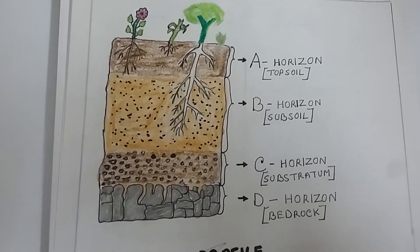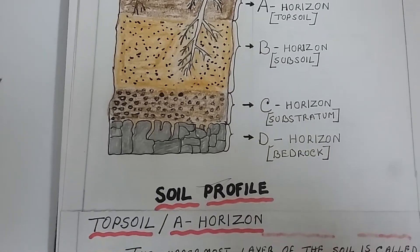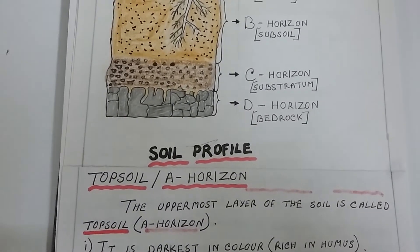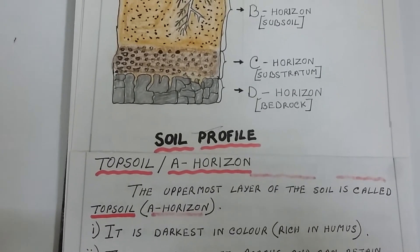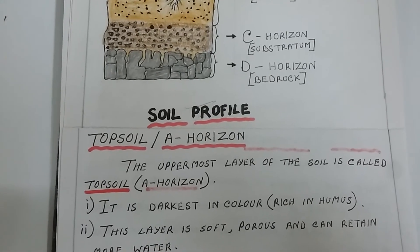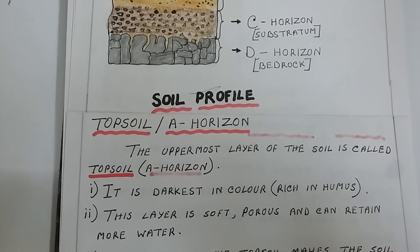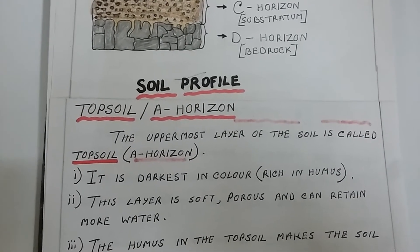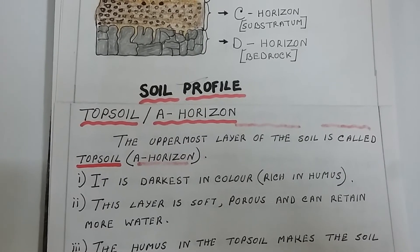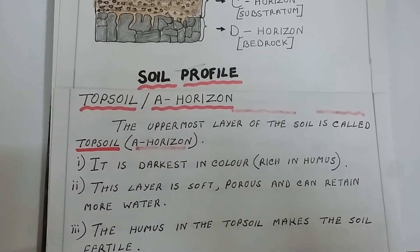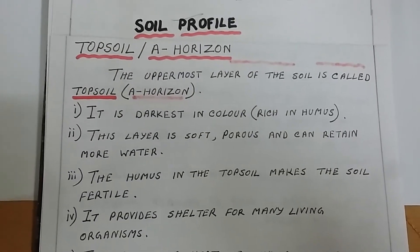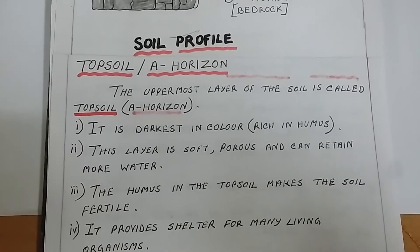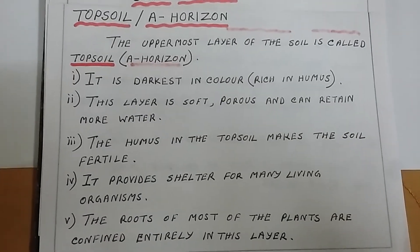The uppermost layer of the soil is called topsoil or A horizon. It is the darkest in color as it is rich in humus and minerals. The humus in the topsoil makes the soil fertile, and plants get their essential nutrients from this layer. The layer is generally soft, porous, and can retain more water. The roots of most small plants are confined entirely in this layer.